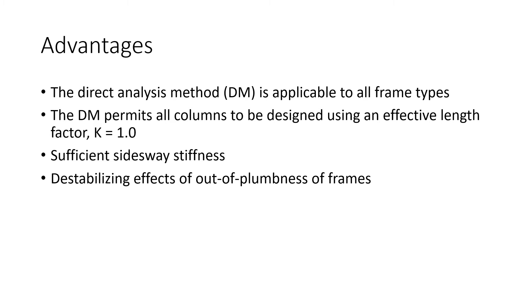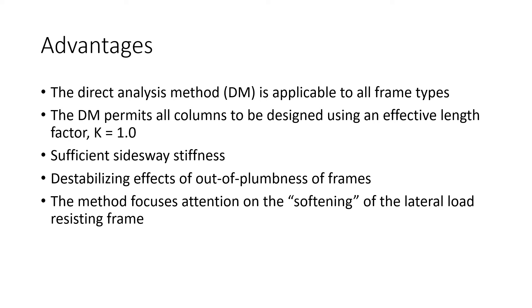The method focuses attention on the softening of the lateral load-resisting frame at the ultimate limit state by requiring a reduction in member properties, and directly highlights inelastic effects on column and frame stiffness through the application of tau_b in the analysis. The direct analysis method provides more accurate estimates of internal forces in the structure, including the influence of geometric imperfections and stability effects in the calculation of forces in beams, beam-columns, and their connections — whereas the effective length method does not. This is particularly important for beams and connections supporting relatively light gravity loads but providing rotational restraint to column ends.